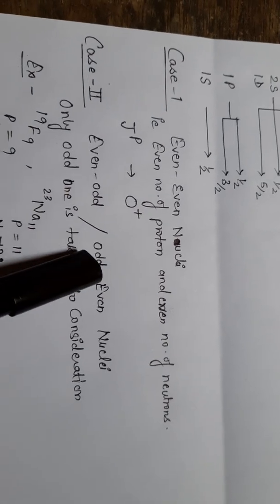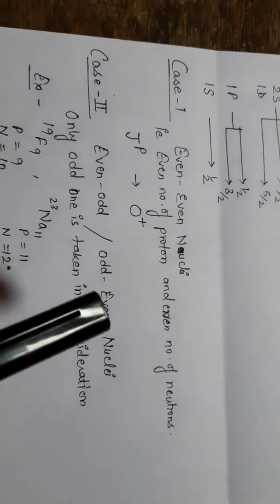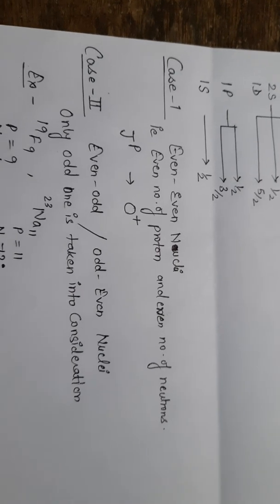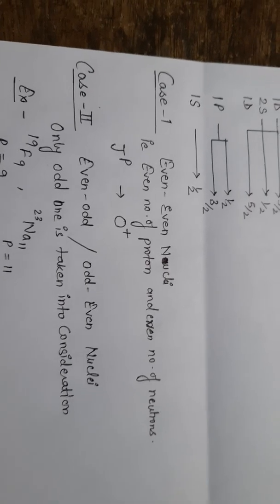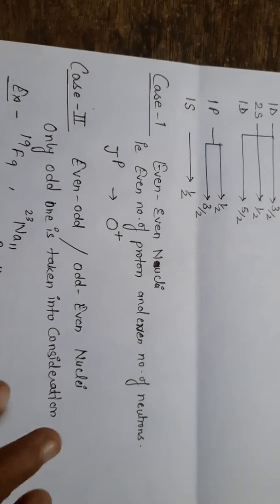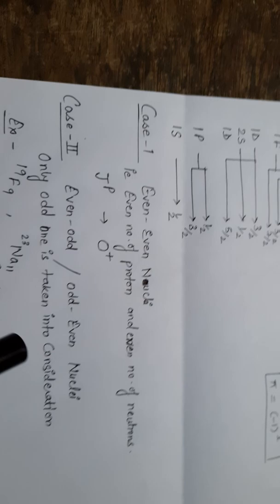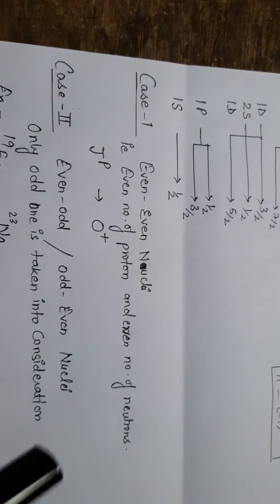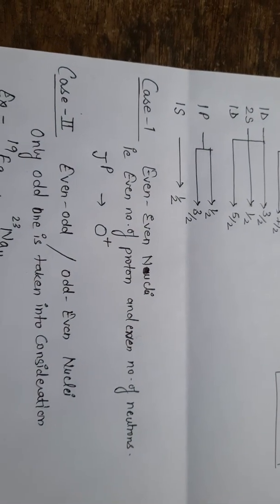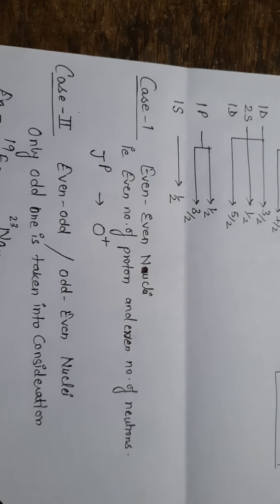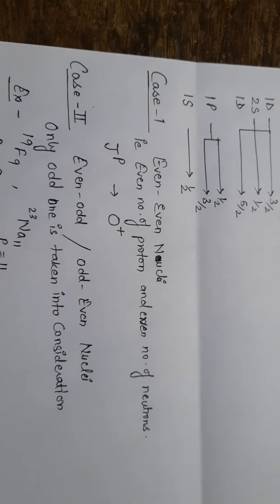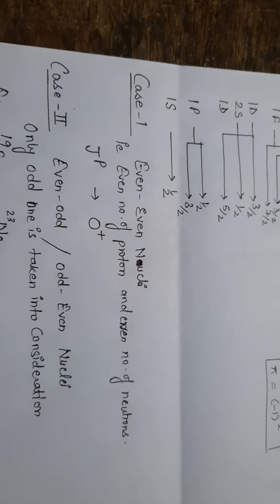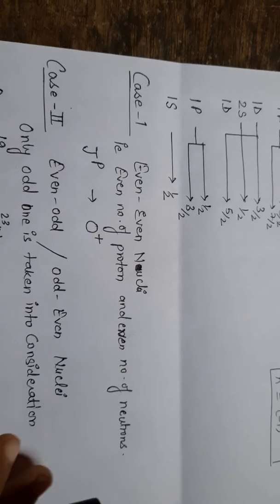The second case is even-odd or odd-even nuclei, meaning either an odd number of protons or an odd number of neutrons. In that case, we always consider the odd one: if we have an odd number of protons we consider the protons, and if we have an odd number of neutrons we consider the neutrons.